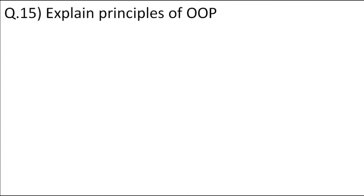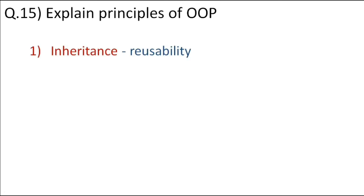Explain the principles of object-oriented programming. There are four principles. The first is inheritance, in which parent class properties are inherited in the child class. For example, if you have an Animal class with an eat method, and child classes like Dog and Cat also implement eat, you don't need to implement eat in every child class — the child class can simply extend the Animal parent class and reuse it.